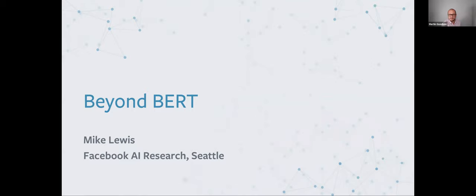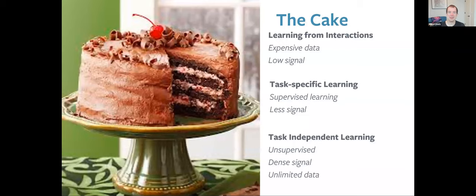Thank you very much for the introduction and the invitation to speak here. In this talk, I want to talk about some recent work on unsupervised representation learning for natural language processing, which has really been revolutionizing the field over the last couple of years. To motivate this, let's start with a metaphor from Yann LeCun about learning as a kind of cake, which has three layers.